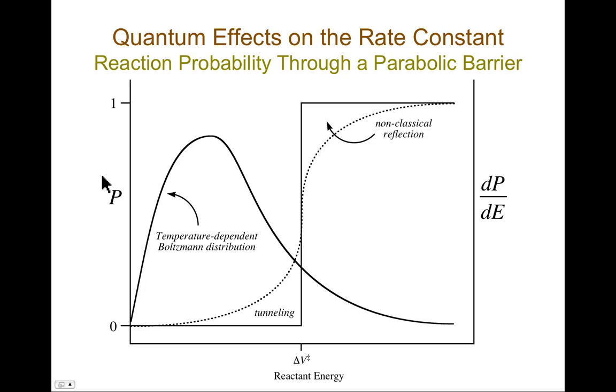So in a classical world, if I were to plot the probability of a system moving from left to right towards that barrier of going beyond the barrier, I would have zero probability until I get to exactly the energy of activation, at which point I would have unit probability. I would just go zooming right over. There's that barrier underneath me and I just don't care. So that's a classical world.